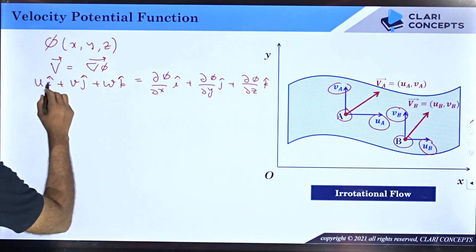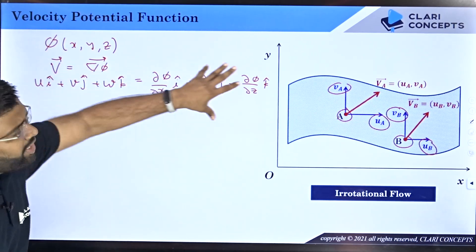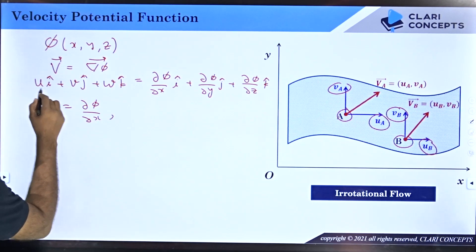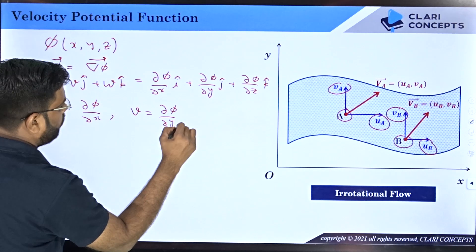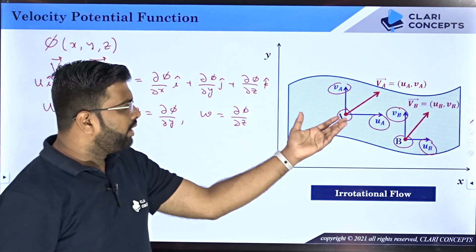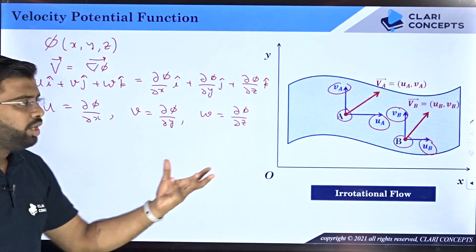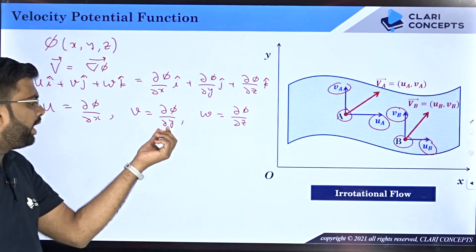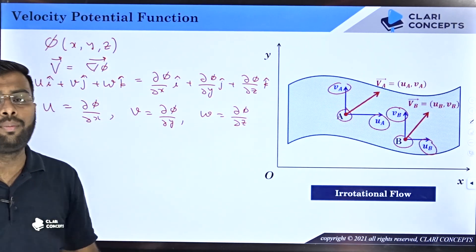Once you have the velocity potential function for an irrotational flow, you can easily get the velocity in all three directions: u = ∂φ/∂x, v = ∂φ/∂y, and w = ∂φ/∂z. Rather than having different formulations for u, v, and w, you can have one velocity potential function giving you all three components. However, velocity potential function is not always available — it is only available for irrotational flows.